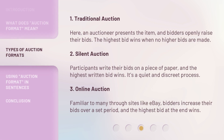There are three main types. 1. Traditional Auction: an auctioneer presents the item, and bidders openly raise their bids — the highest bid wins when no higher bids are made. 2. Silent Auction: participants write their bids on a piece of paper, and the highest written bid wins — it's a quiet and discreet process. 3. Online Auction: familiar to many through sites like eBay, bidders increase their bids over a set period, and the highest bid at the end wins.